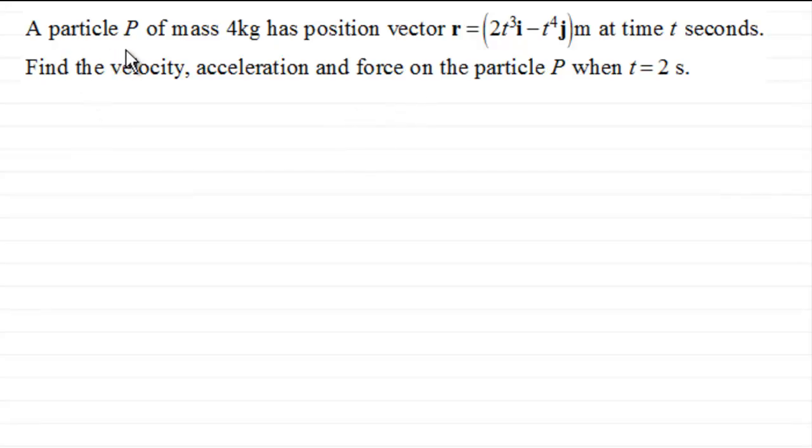We've got a particle P of mass 4 kilograms and it has a position vector r equal to 2t cubed i minus t to the power 4j meters at time t seconds. The question is to find the velocity, the acceleration, and the force on the particle P when t equals 2 seconds.